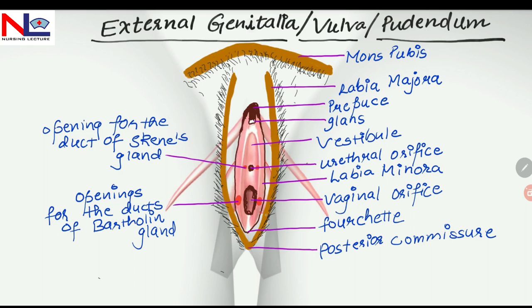The last structure is the vestibular bulb, as you can see here. These are bilateral elongated masses of erectile tissue which lie beneath the mucosal membrane of the vestibule, and they cause narrowing of the vagina during sexual intercourse. Hopefully you have gotten an idea about the external genital regions. Thank you.